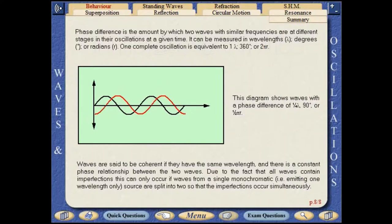This diagram shows waves with a phase difference of one quarter of a wavelength, 90 degrees, or pi over two radians.